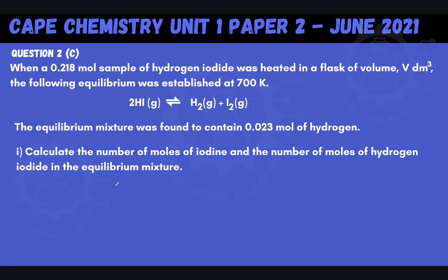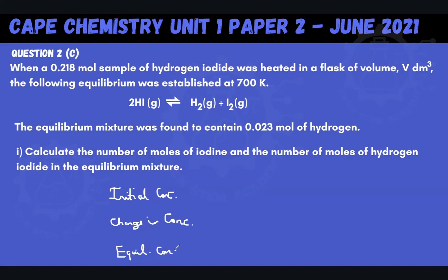I'm going to write here: Initial — my initial concentration is going to go here. Then I'm going to have my Change in concentration — that's what the C means. And then here I'm going to have my Equilibrium concentration, so my final concentration once everything has equilibrated at 700 Kelvin. I'll put HI here, H₂ here, and I₂ here as my columns.